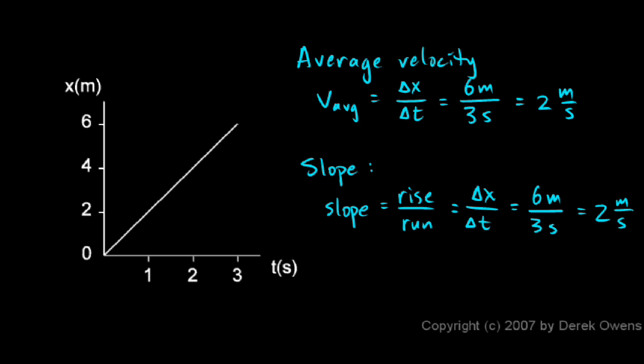Now look at these two answers. We got 2 meters per second for the average velocity and 2 meters per second for the slope. And that wasn't a coincidence. They didn't just happen to turn out to be the same number. They are, in fact, the exact same calculation. Delta x over delta t, 6 meters over 3 seconds.